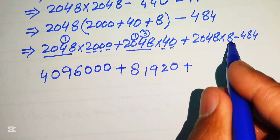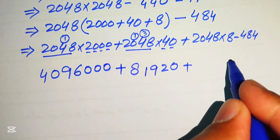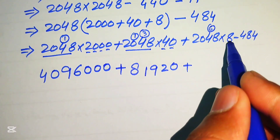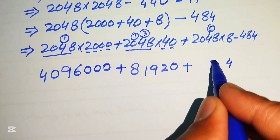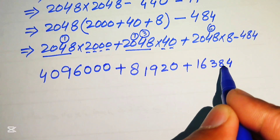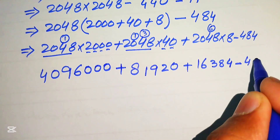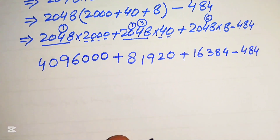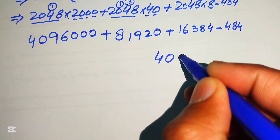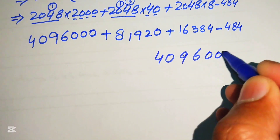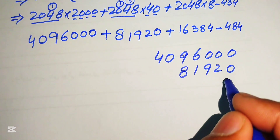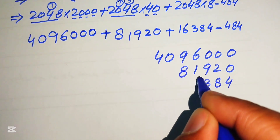For 2048 times 8: 8 times 8 is 64, write 4 carry 6; 8 times 4 is 32, plus 6 is 38, write 38 since next digit is 0; 8 times 0 is 0; 8 times 2 is 16 — giving 16,384. We now have three partial products: 4,096,000 and 81,920 and 16,384, minus 484.